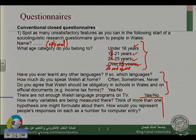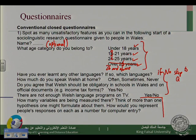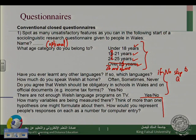Because here you are presupposing that they would answer yes, since you say 'If so, which languages?' But how about if the answer is no — 'I haven't learned any other language'? You should have another option: 'If no, skip to question number four.' For the question 'How much do you speak Welsh at home? Often / Sometimes / Never' — again, if my answer was no, I don't speak Welsh, this does not apply to me. You need to tell your participants: 'If your answer is no, skip to question such-and-such.'